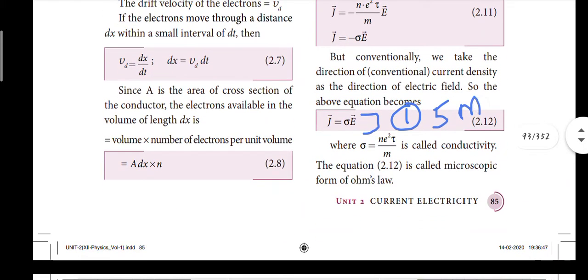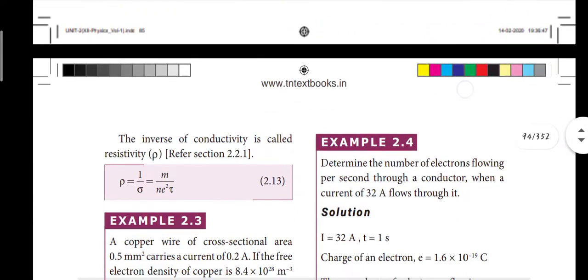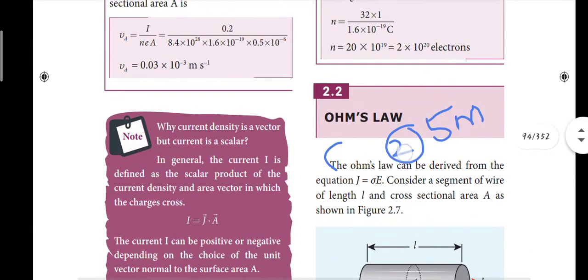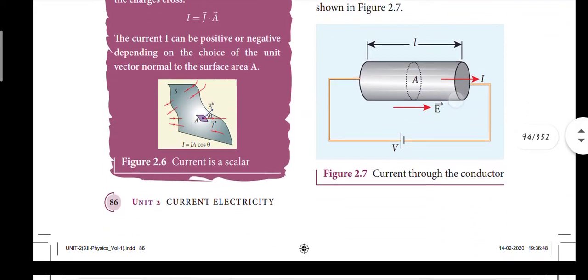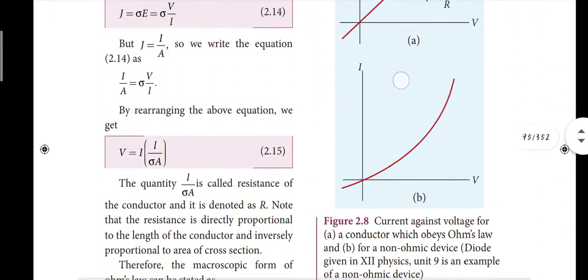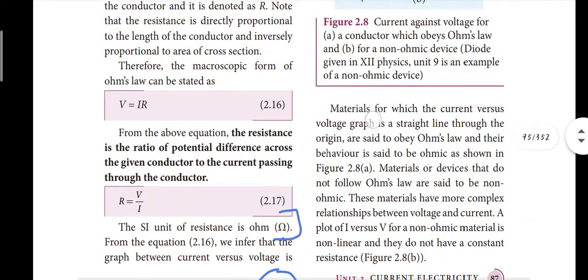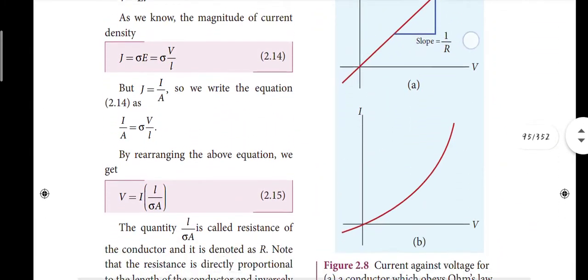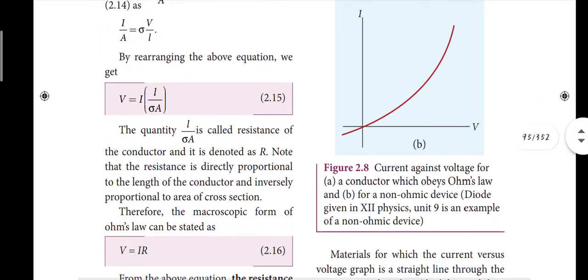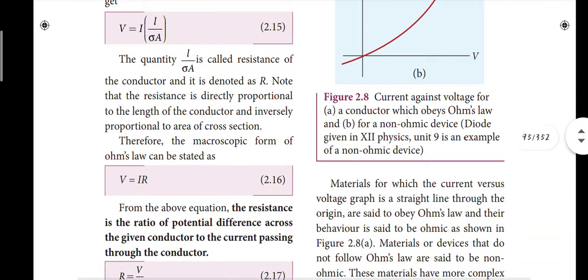First question on the page: j is equal to sigma E vector. Next, second question is Ohm's law heading. The diagram shows R is equal to V by I. So limitation will be in the two graphs - what is meant by ohmic and non-ohmic device. That's the answer. This is second question of 5 marks.